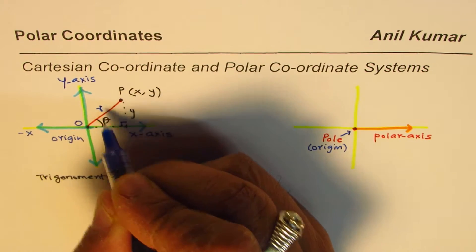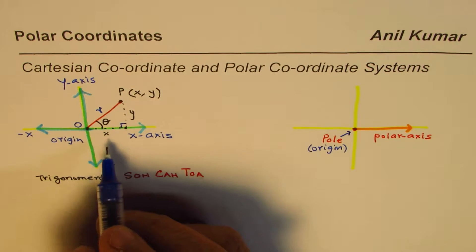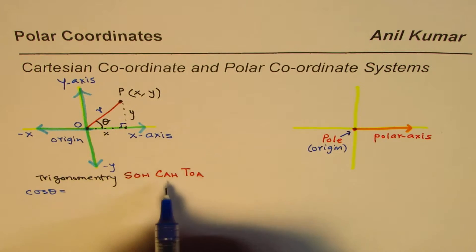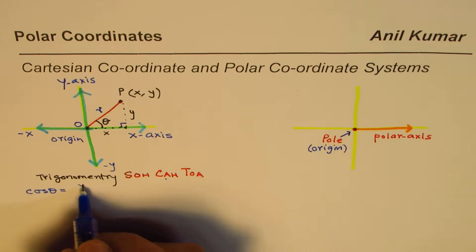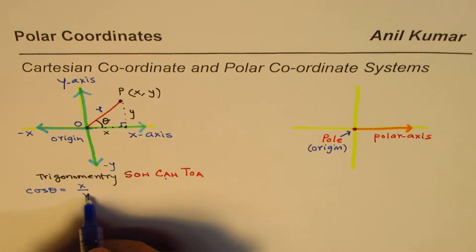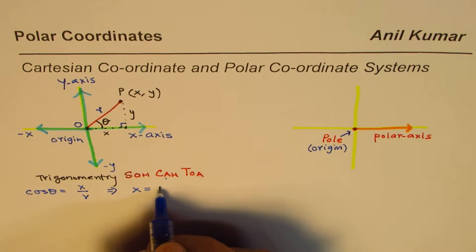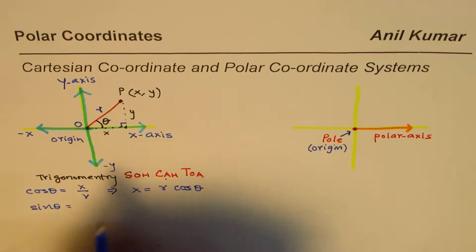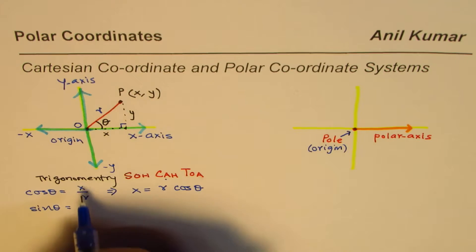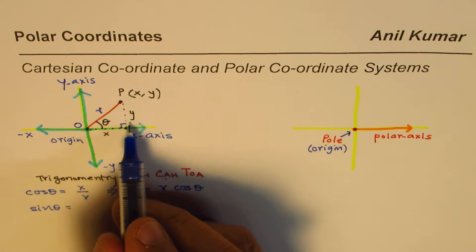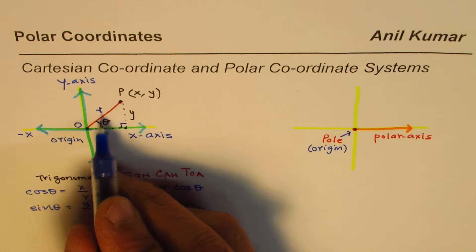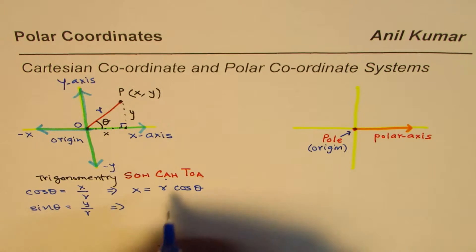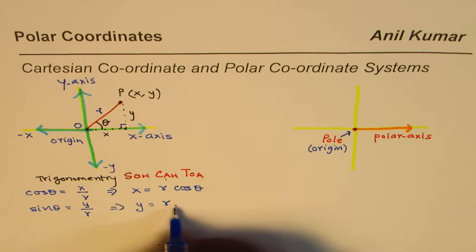For the right triangle with point P at (x, y), cosine theta equals adjacent over hypotenuse, which is x over r, giving us x = r·cosθ. Similarly, sine theta equals the opposite side y over the hypotenuse r, so rearranging gives us y = r·sinθ.